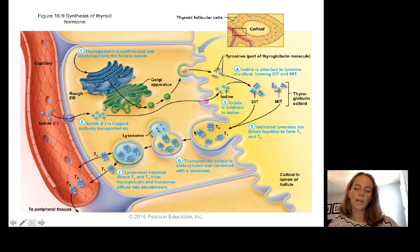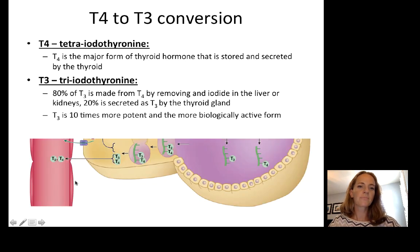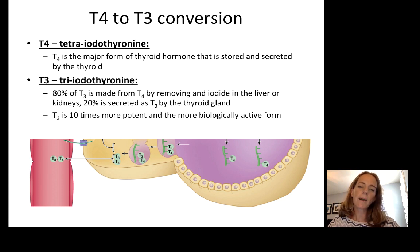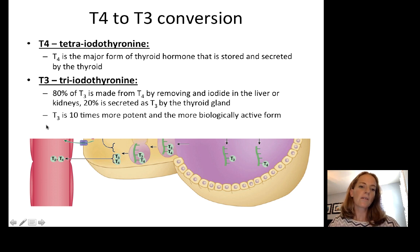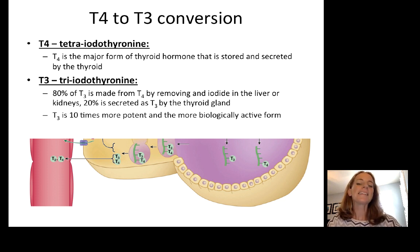T3 and T4 have important differences. T4 is the major form stored and secreted by the thyroid. The majority of T3 is made once T4 gets to the liver and kidneys — only about 20% of circulating T3 was directly secreted by the thyroid. The majority of T3 was converted by the liver and kidneys. T3 is the most potent, most active form of thyroid hormone — T3 is 10 times more potent than T4 — so it is the more important of the two.